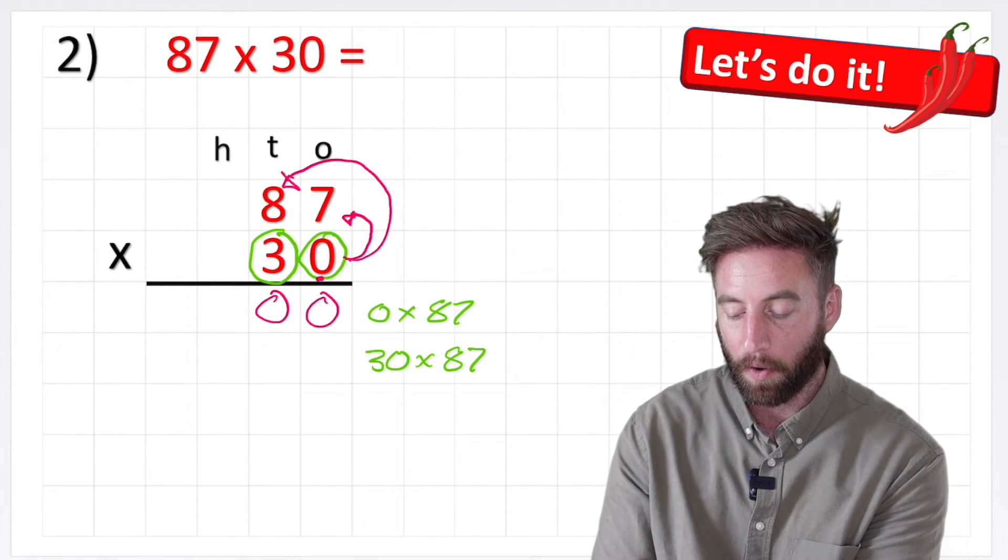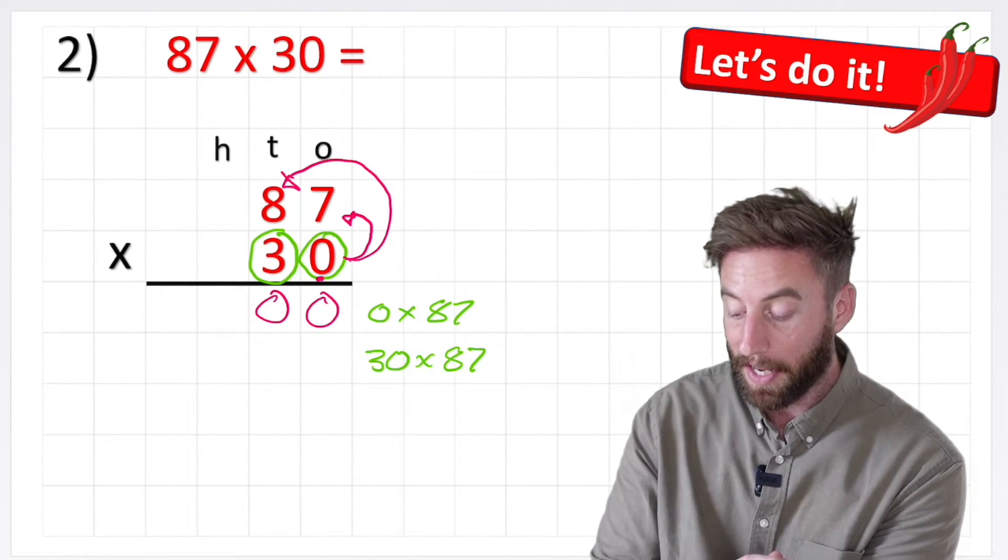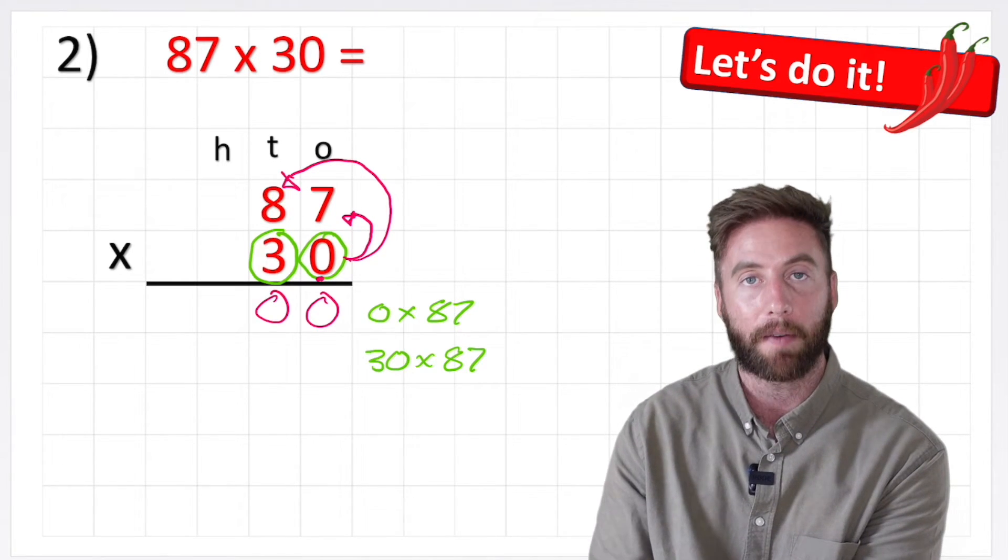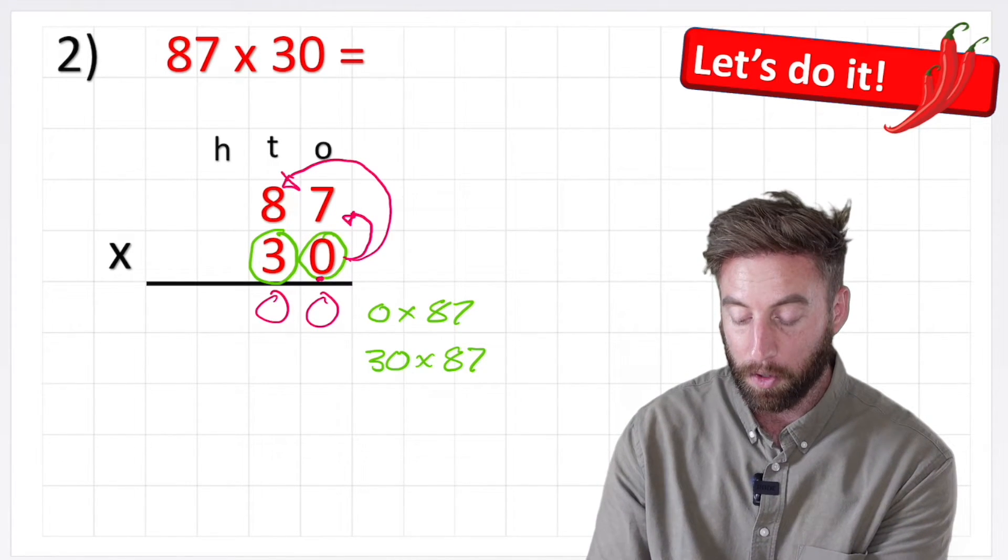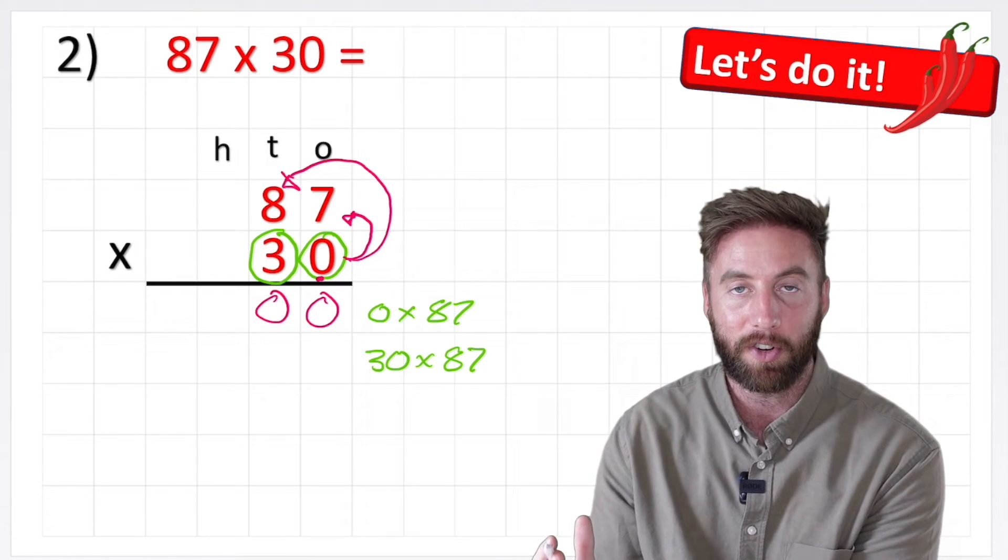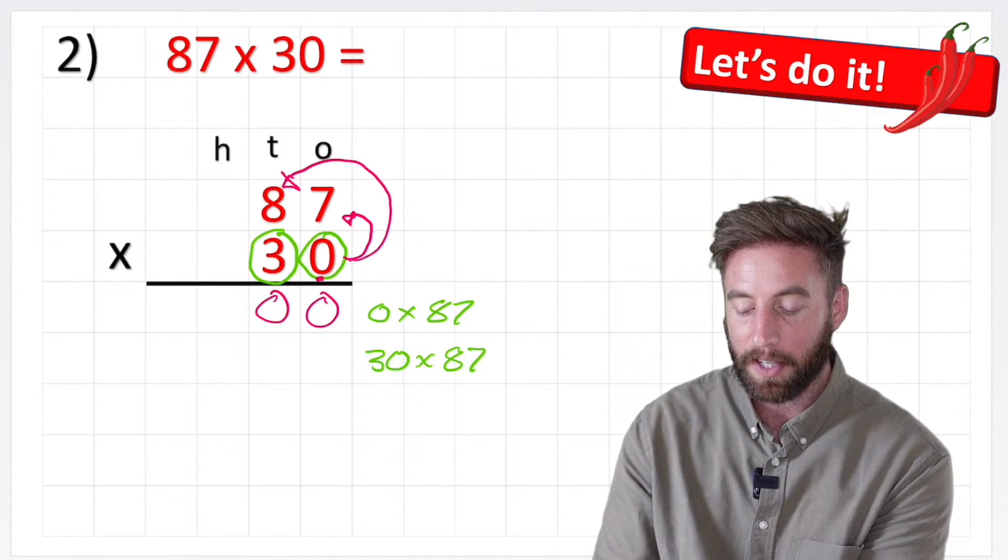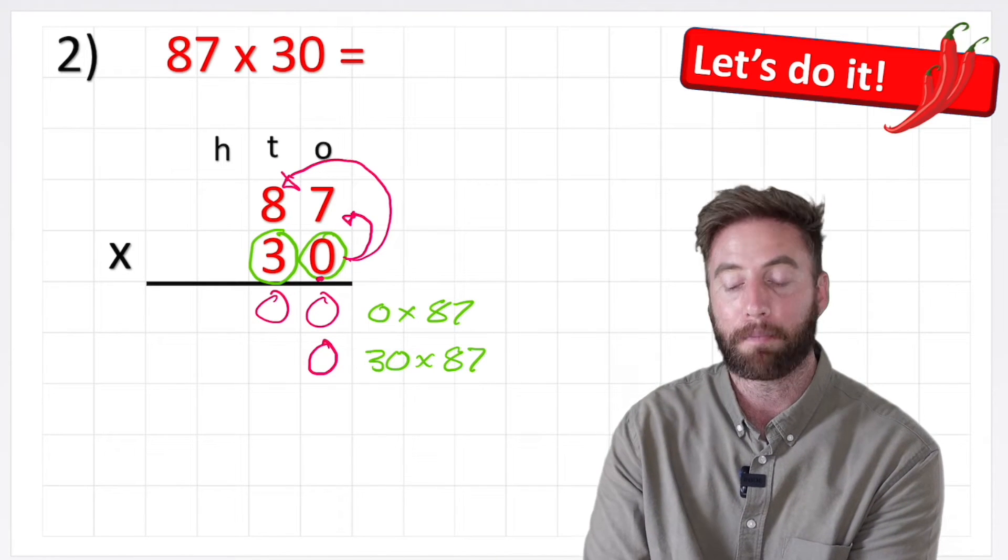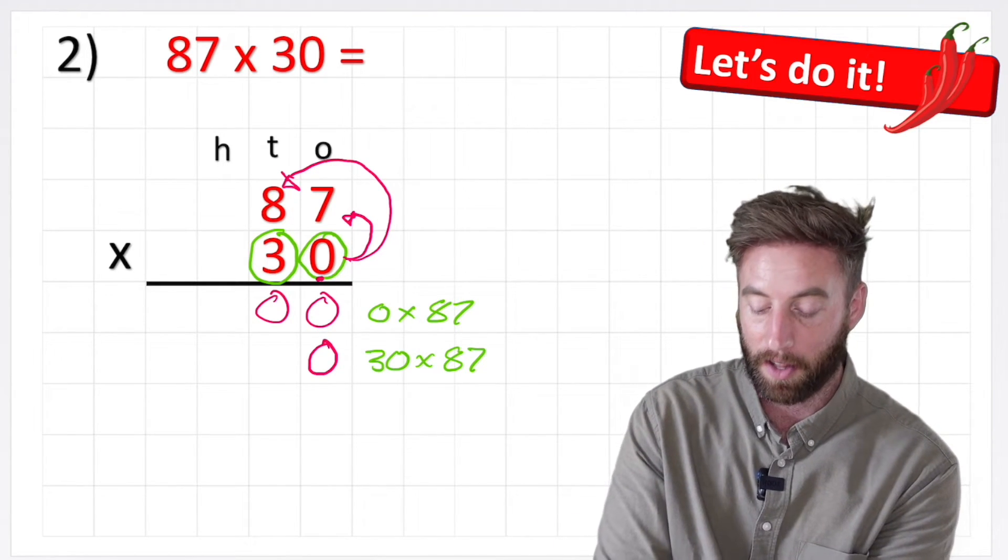Okay, let's look at our second row then. So I've got 30 times 87. Okay, so let's look at our second row, we have 30 times 87, but I want to start multiplying this 3 as a 3. So to make my answer a 30, I'm going to put my place holder in place already, because 30 is 10 times larger than 3.